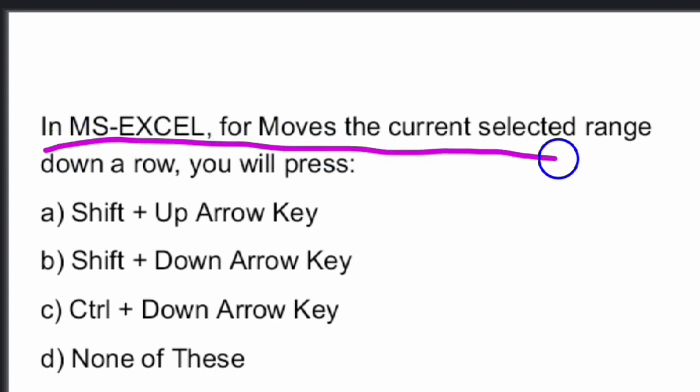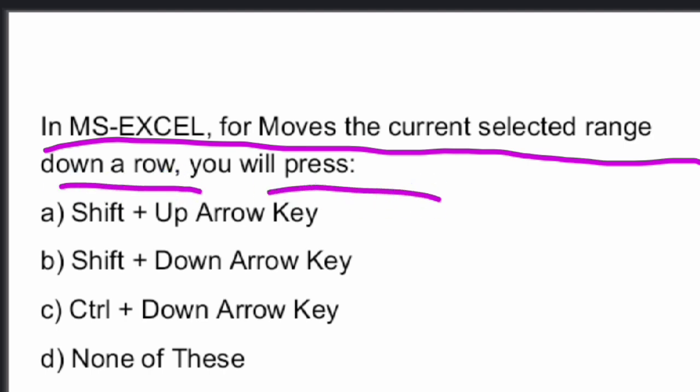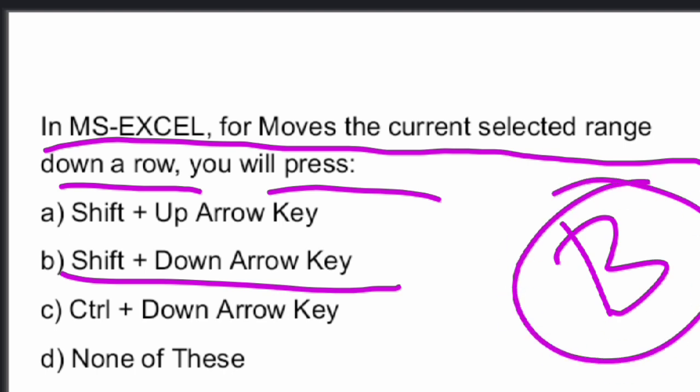Next question: In MS Excel, to extend the current selected range down to the next row, you press Shift plus the down arrow key. Option B — Shift plus down arrow key — is the right answer.